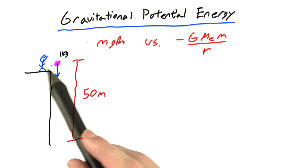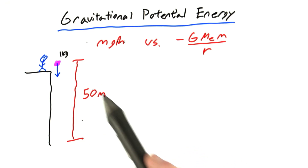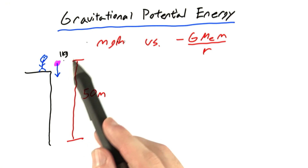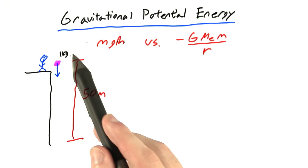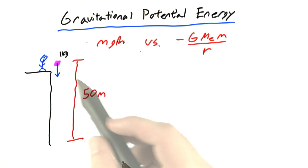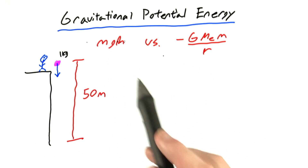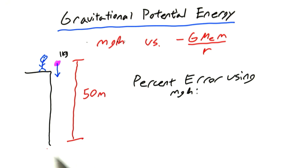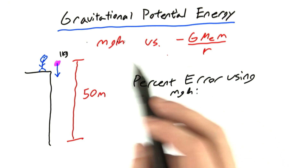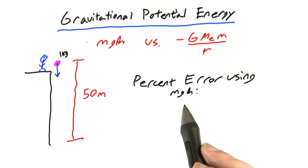Let's imagine that we have a person dropping a 1 kilogram ball off a 50 meter tall building. It turns out that this 1 kilogram mass doesn't actually matter to the final calculation, but we'll just throw it in there to make our lives easier. Solve for the kinetic energy of the ball at the bottom of the building using both forms of gravitational potential energy. Then tell me what's the percent error using mgh instead of the more general formula.